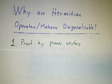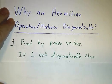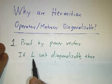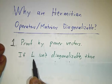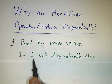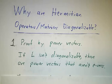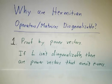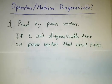The first proof uses power vectors. Suppose that we had a Hermitian operator that's not diagonalizable. Then there isn't a basis of eigenvectors, but there's always a basis of power vectors — every matrix admits a basis of power vectors. So you should be able to find some power vectors that aren't eigenvectors.